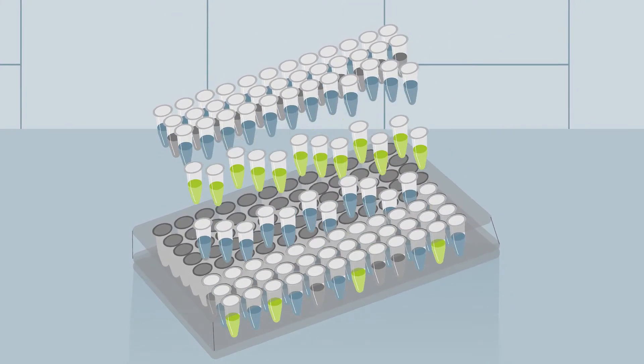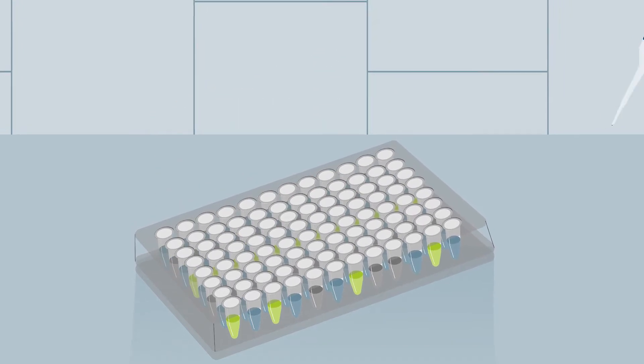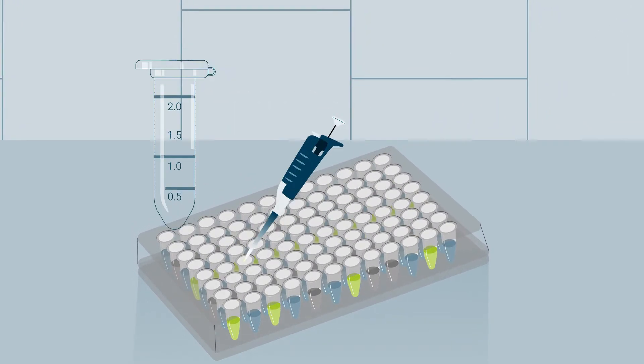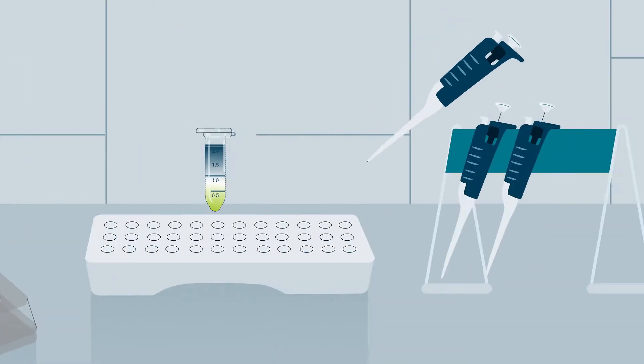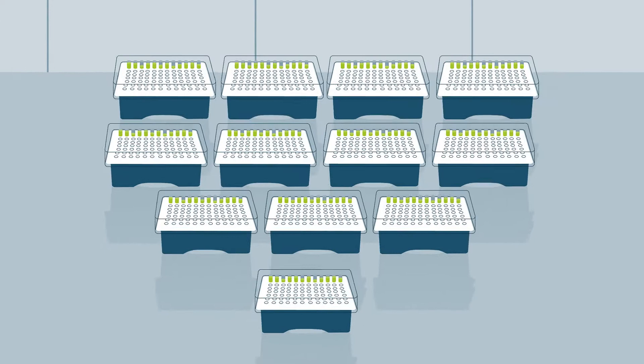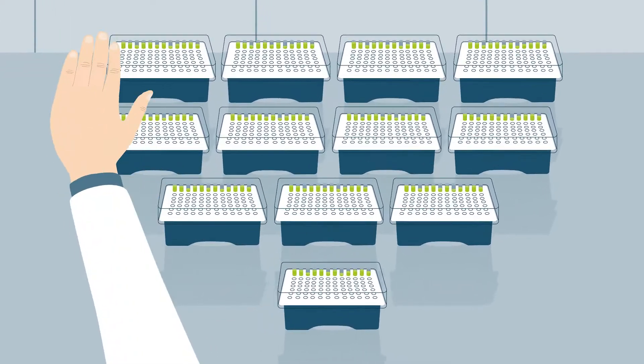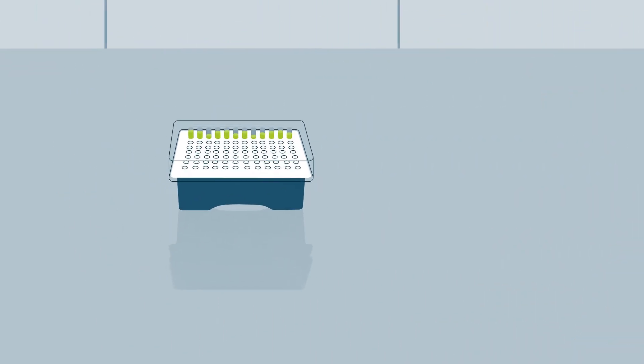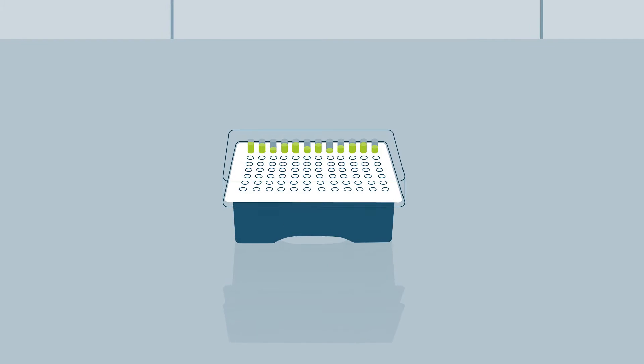Instead of processing 96 individual reactions, they are now combined by pooling and all subsequent steps can be handled in one reaction tube. This procedure saves up to 95% of the required consumables in tips, PCR plates and tubes and allows handling of large sample numbers.